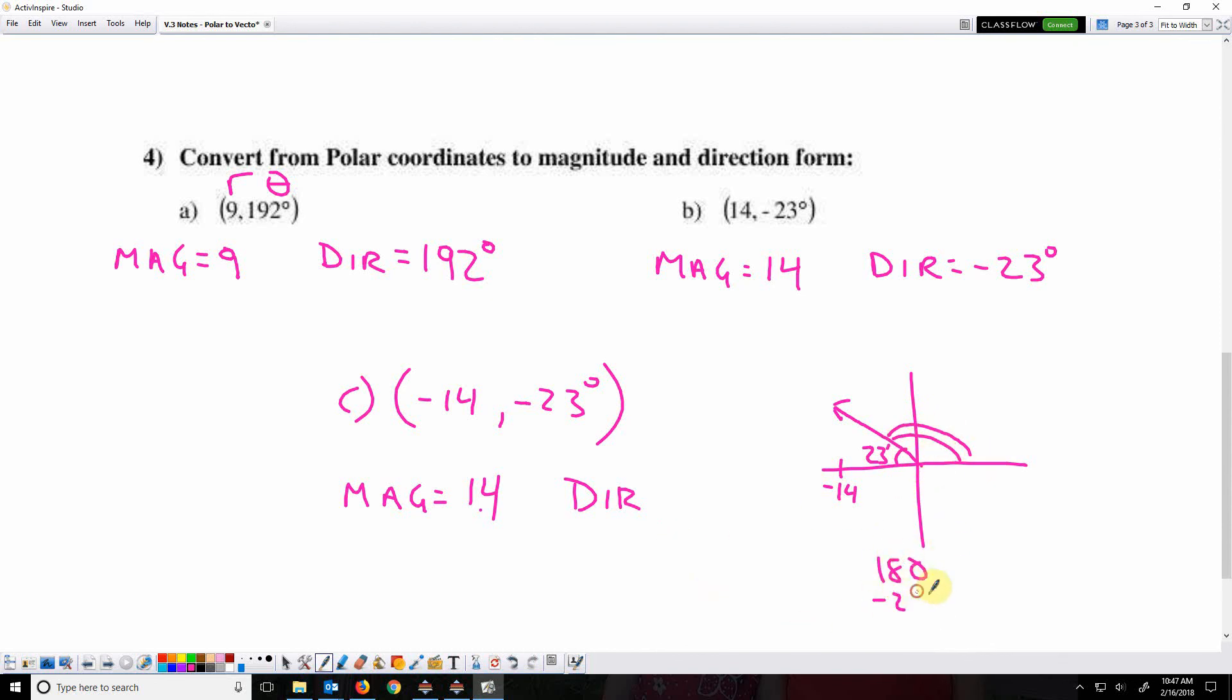180 minus 23. So the direction is 157 degrees. So be careful when r is negative and you have to find your direction.